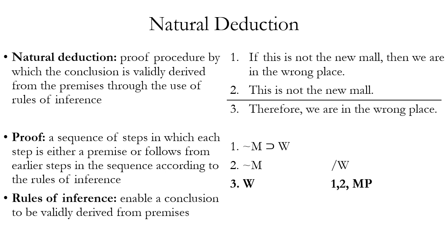Each time you add another simple proposition — P, Q, R, S, etc. — to the truth table, you double the number of rows needed to complete it. So you're basically increasing the size of the truth table exponentially by adding additional simple propositions. That's one of the reasons why proof by truth table can take a lot of time and calculating power.